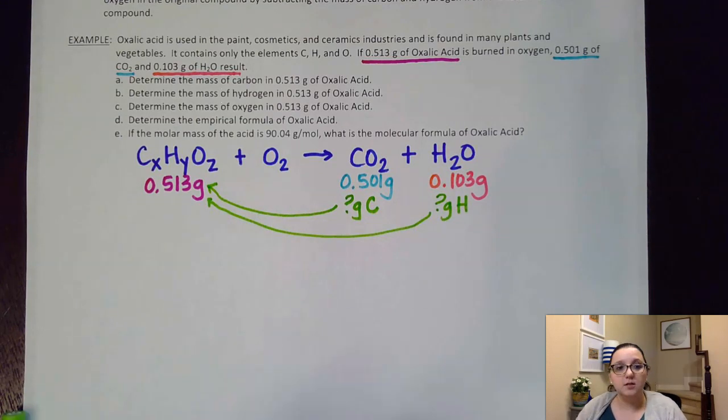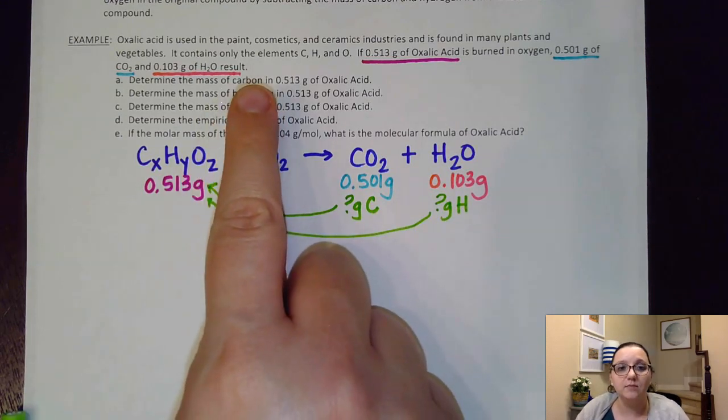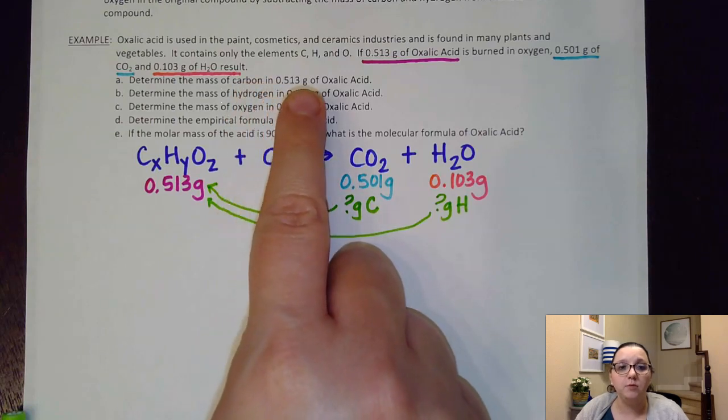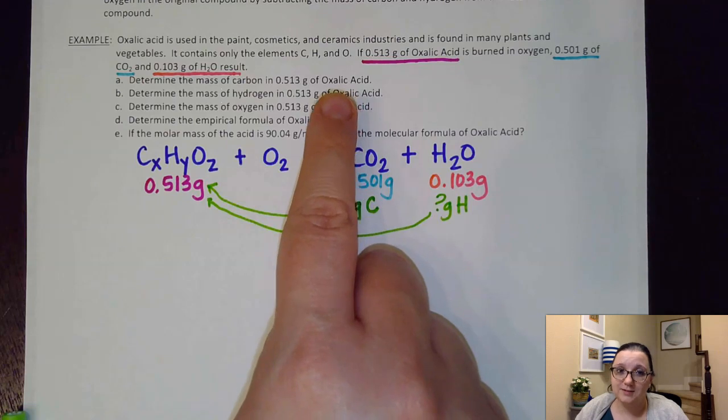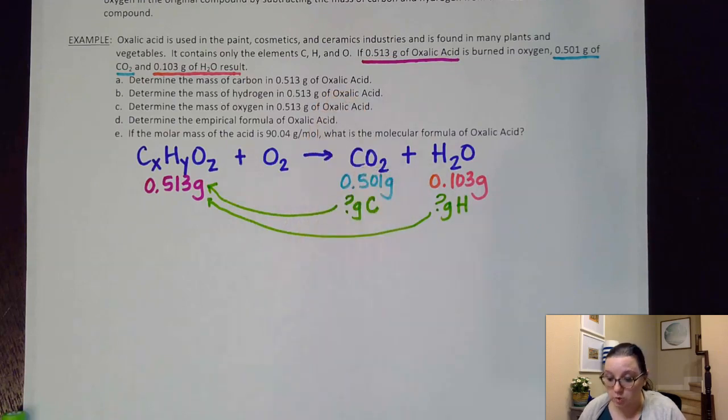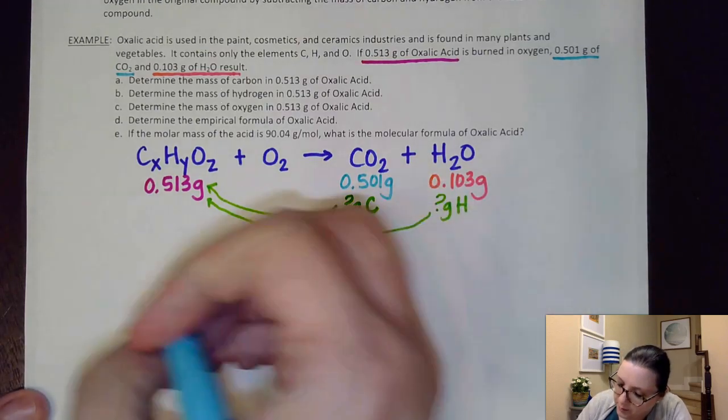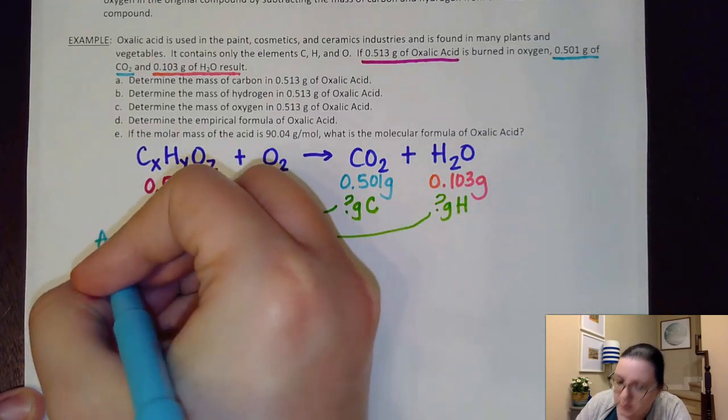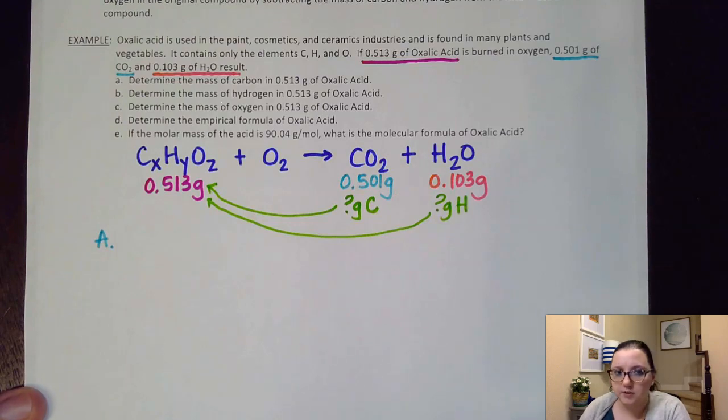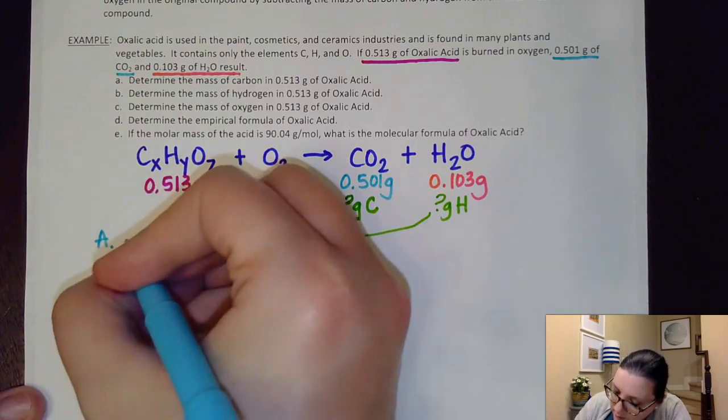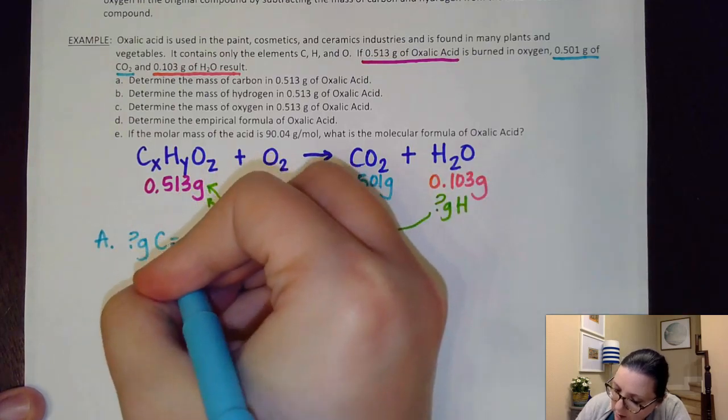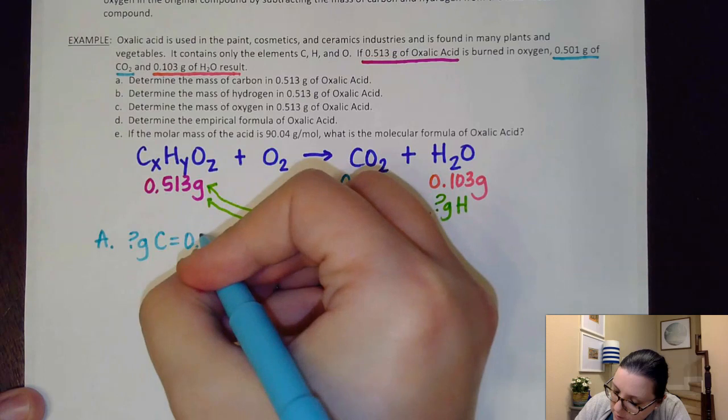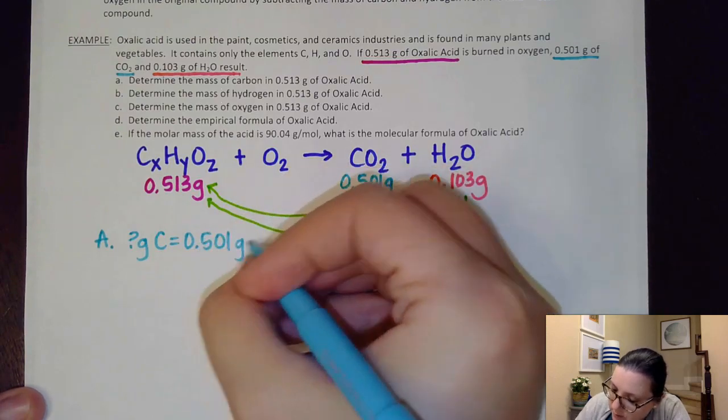So what I'm going to do first on step A is determine the mass of carbon in the 0.513 grams of oxalic acid. Well, to do that, what they're really wanting us to do is to figure out how much carbon was in the CO2. So I'm actually going to kind of rewrite this. So I am going to label my parts. It's always important when you're doing a free response question that's not already labeled to label your parts. And I want to figure out how many grams of carbon are in the 0.501 grams of CO2.